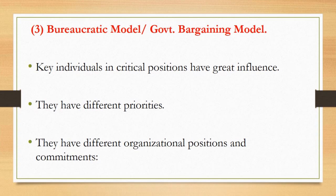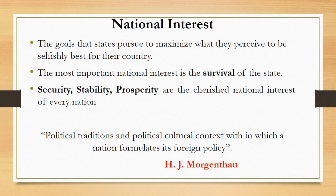The third model of foreign policy decision-making presented by Graham Allison is the Bureaucratic Model, or Government Bargaining Model. In this model, key individuals in critical positions have great influence. They have different priorities, different organizational positions, and different commitments.